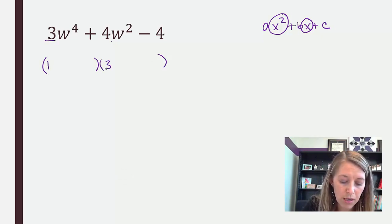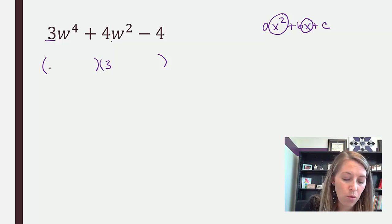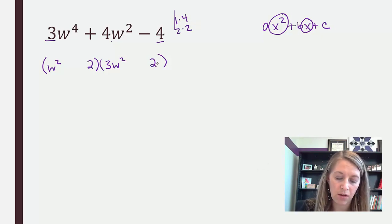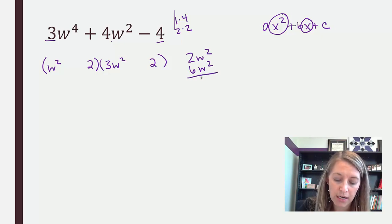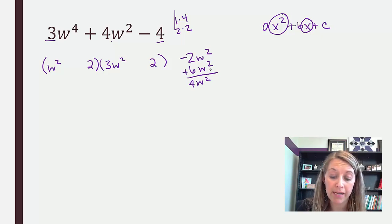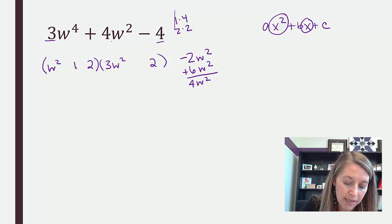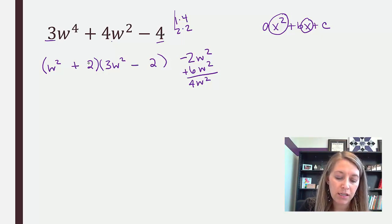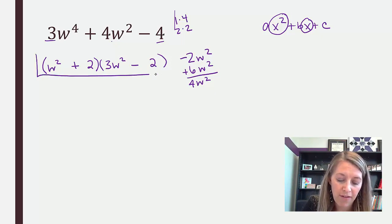Factors of 3 are 1 times 3. Factors of w to the 4th, well that will be w squared times w squared. Moving on to my last, factors of 4 are 1 times 4 and 2 times 2. Let me start with the ones that are closest together. So outside gives me a 2w squared. Inside gives me a 6w squared, and I'm looking to add or subtract these to give me a 4w squared. Well, if I do positive 6 minus 2, that gives me a positive 4w. So I do a positive 6 and a minus 2. I double check my last sign. Positive times negative gives me negative. And so therefore, this is my factoring here.